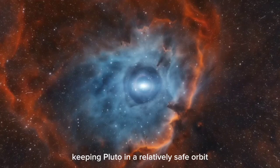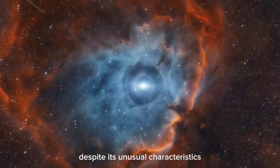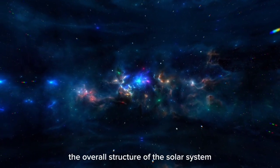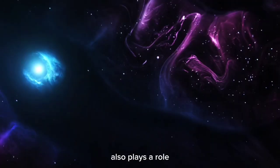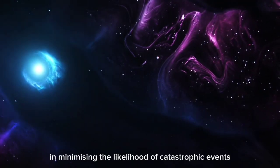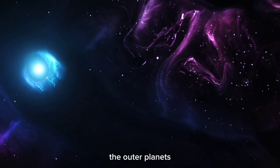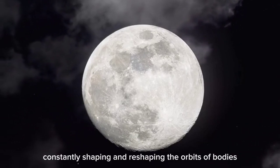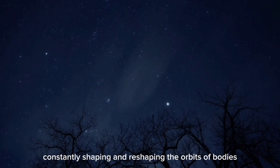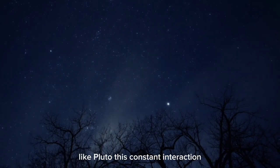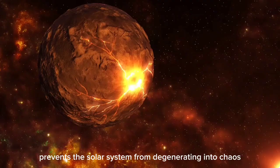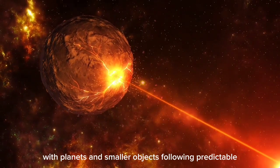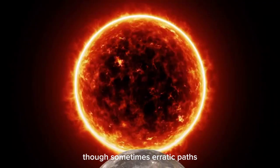In addition to the gravitational forces at play, the overall structure of the solar system also plays a role in minimizing the likelihood of catastrophic events. The outer planets, with their massive gravitational fields, act as sentinels, constantly shaping and reshaping the orbits of bodies like Pluto. This constant interaction prevents the solar system from degenerating into chaos, with planets and smaller objects following predictable, though sometimes erratic, paths.